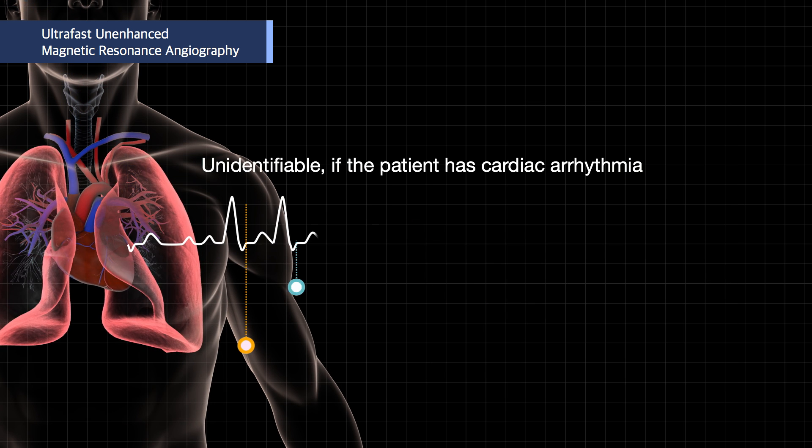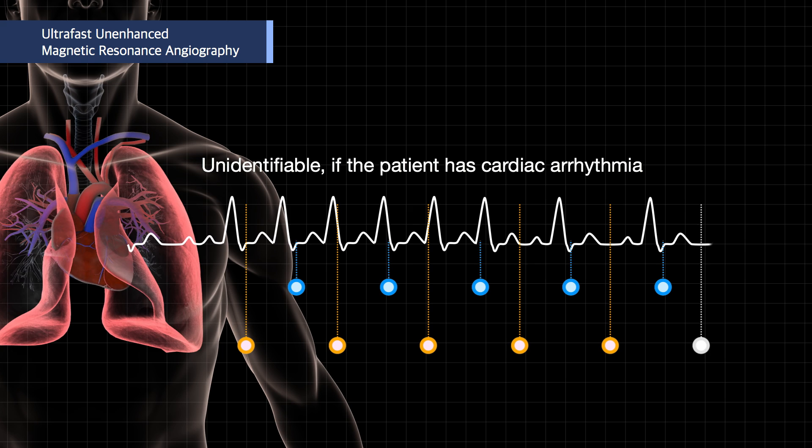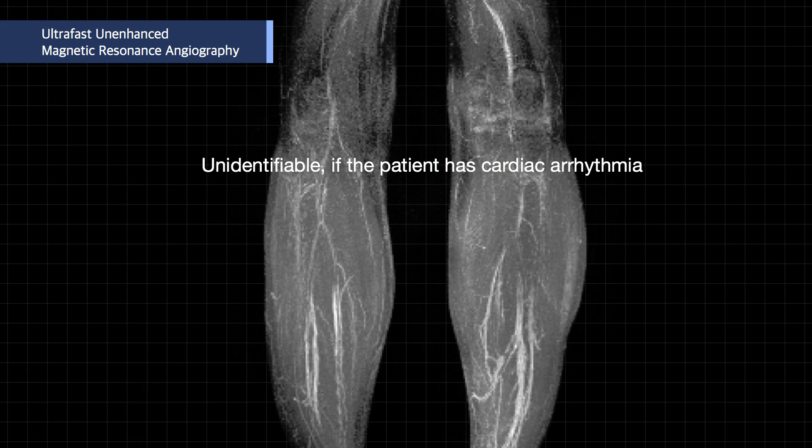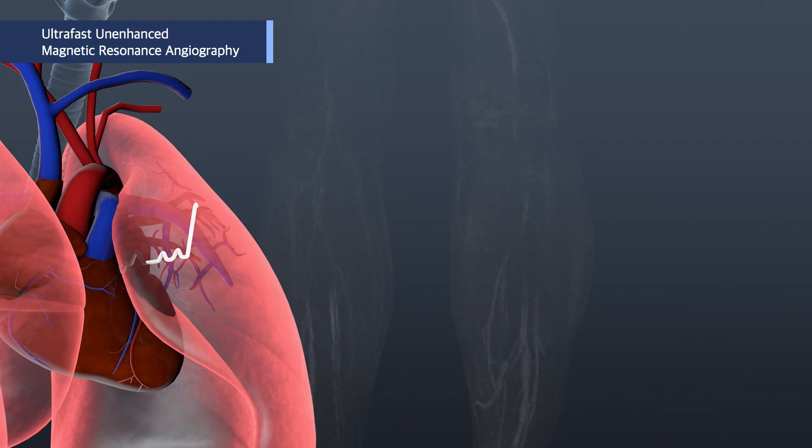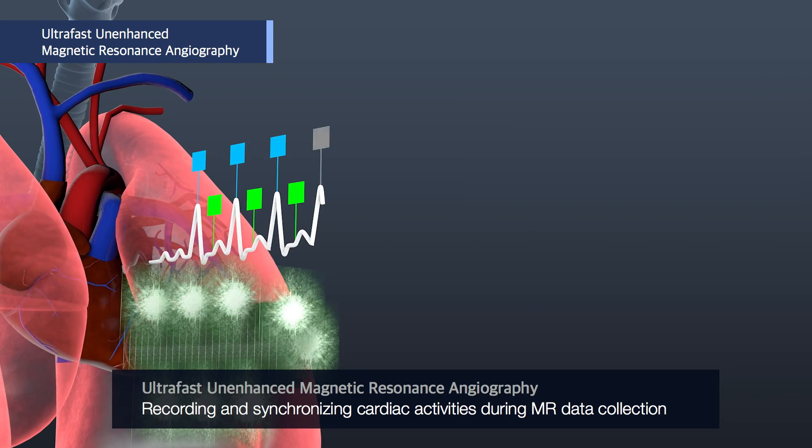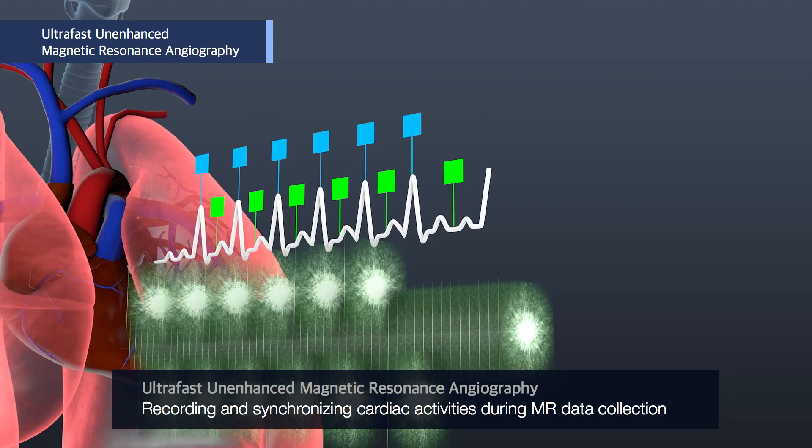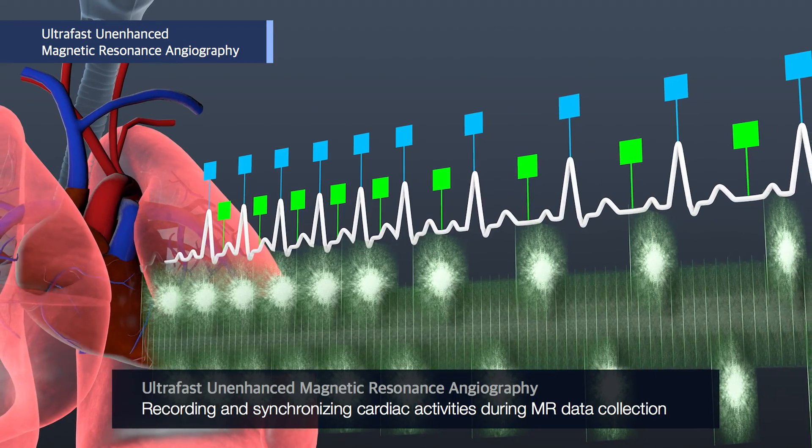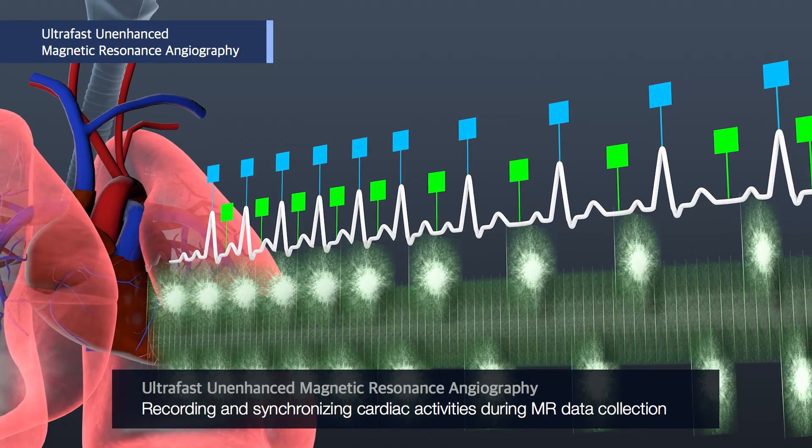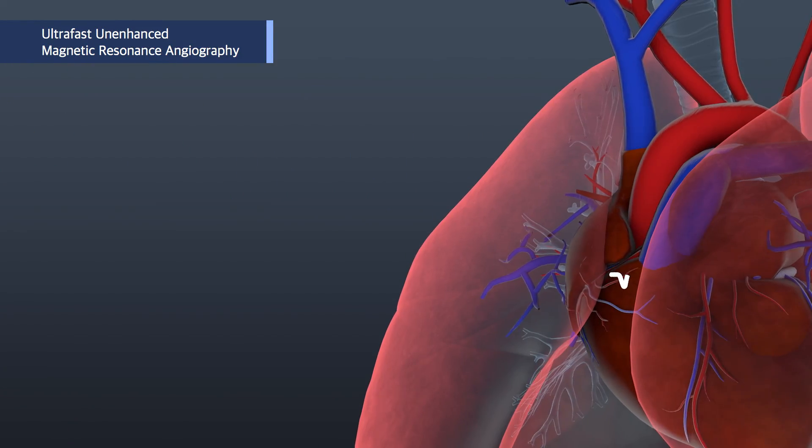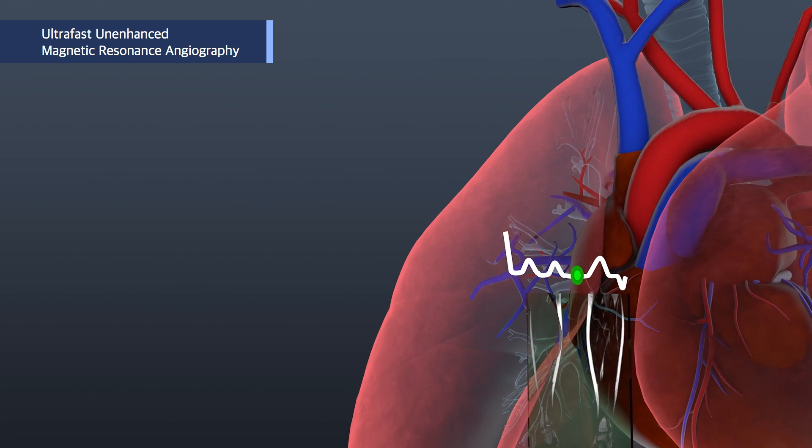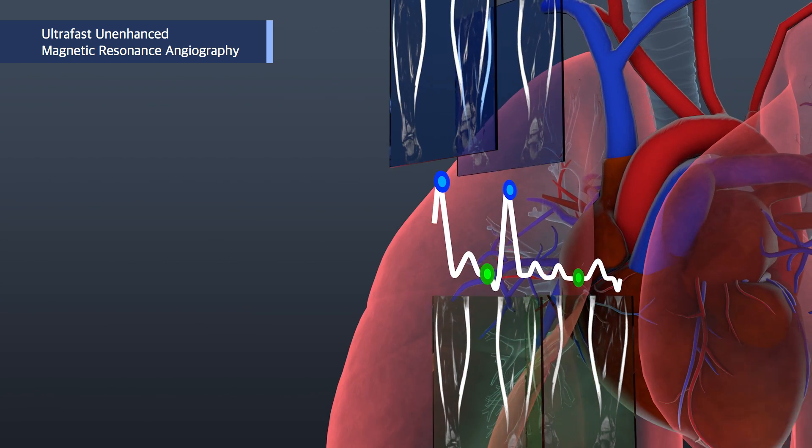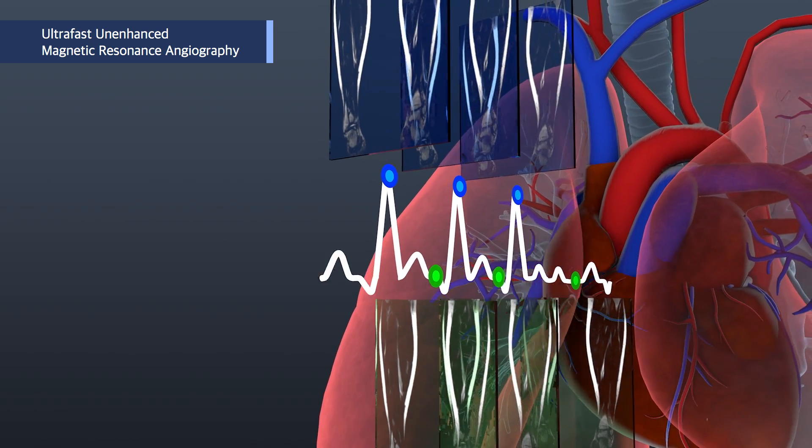But if a patient has cardiac arrhythmia, the conventional method will not work, generating unidentifiable images. Ultra-fast unenhanced magnetic resonance angiography developed by the research team keeps recording and synchronizing cardiac activities during MR data collection. By retrospectively sorting data over all frames with precise timing, even an image of blood vessels of patients in the presence of arrhythmia can be restructured.